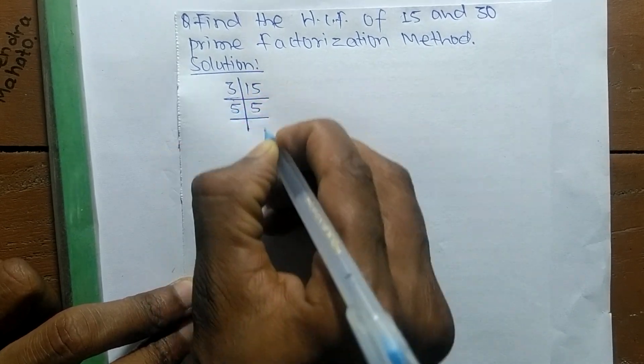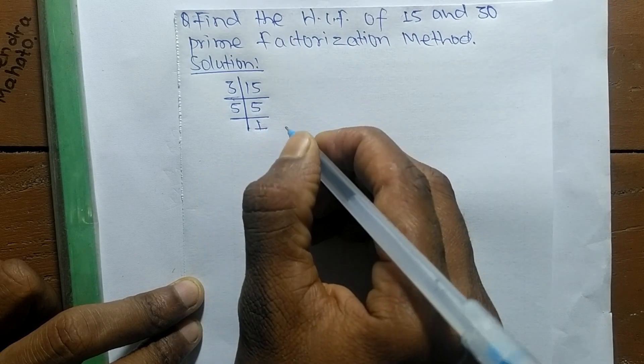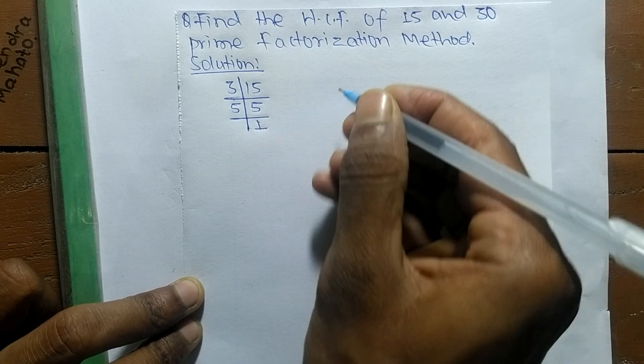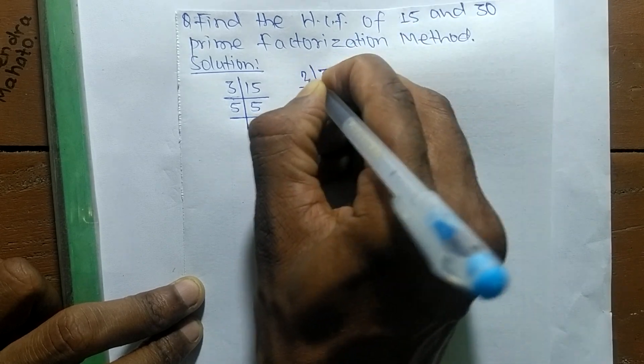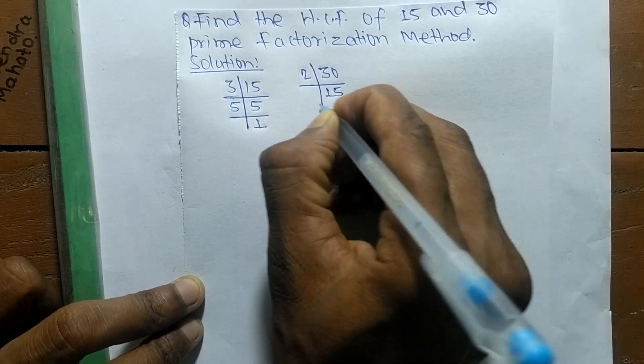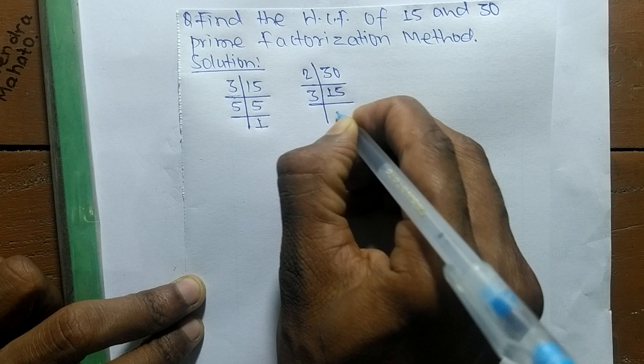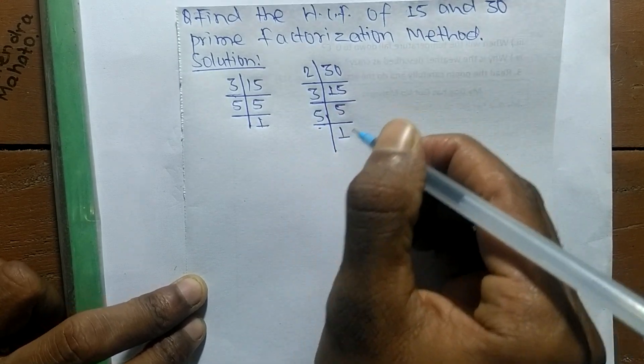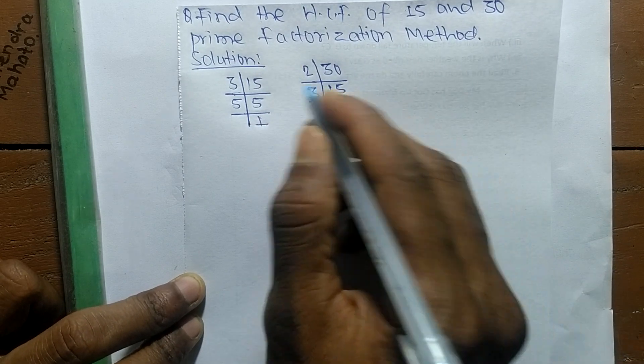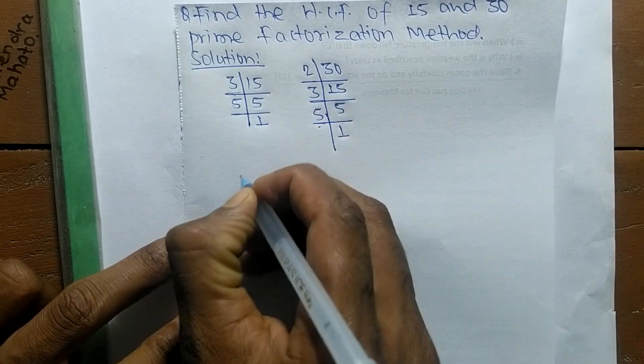5 times 1 means 5. The prime factors of 30 are: 2 times 15 means 30, 3 times 5 means 15, and 5 times 1 means 5.